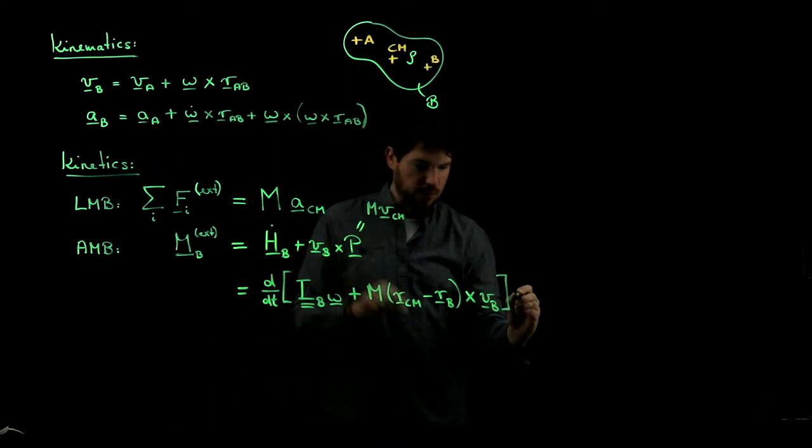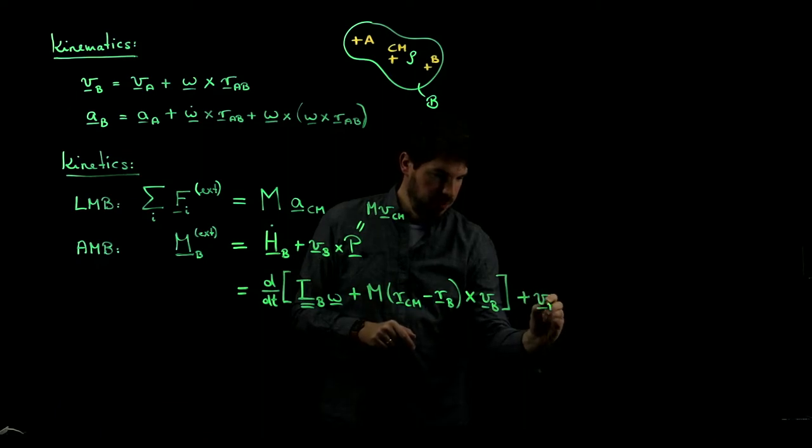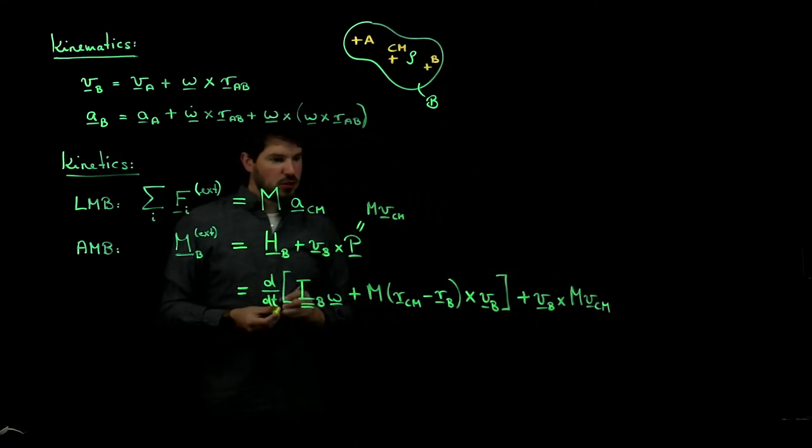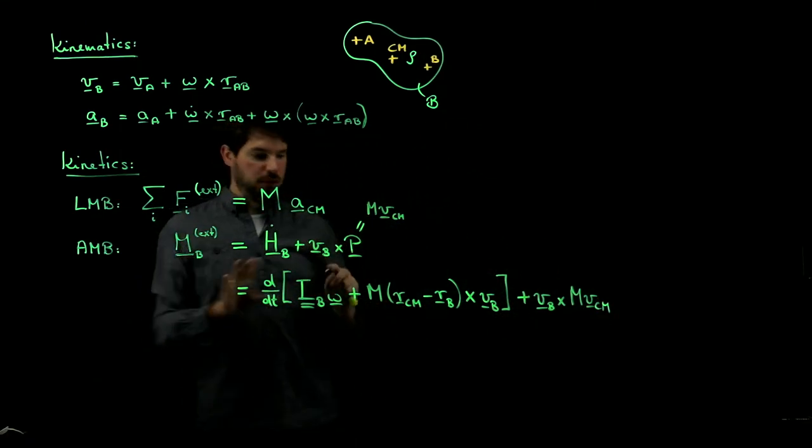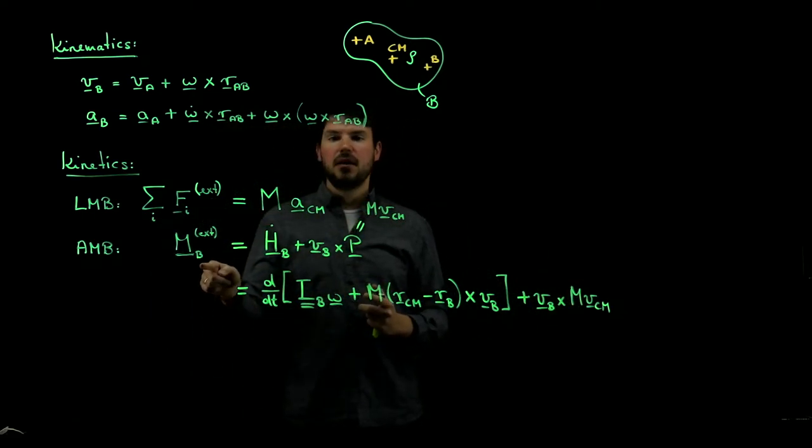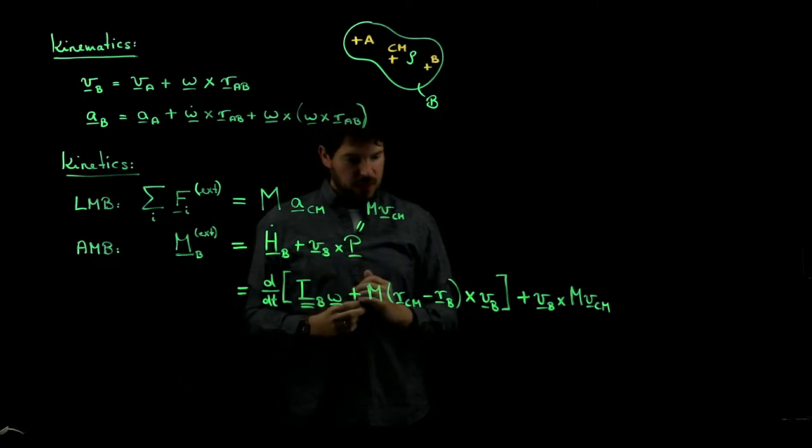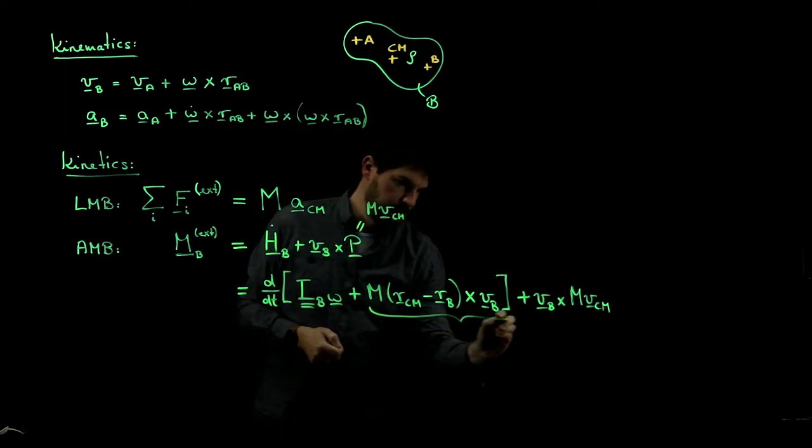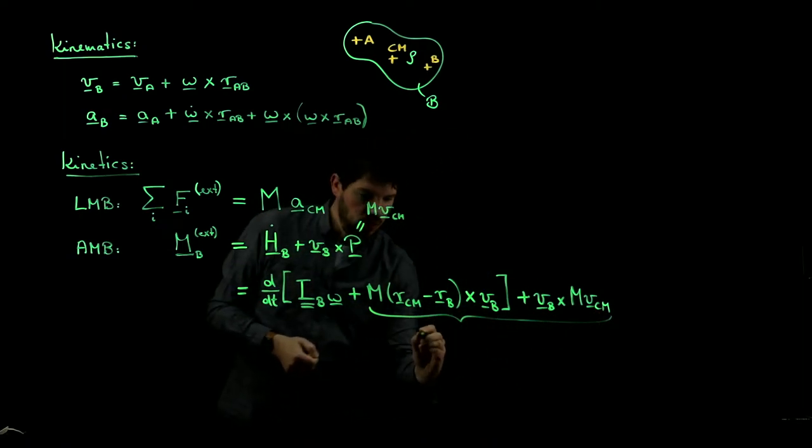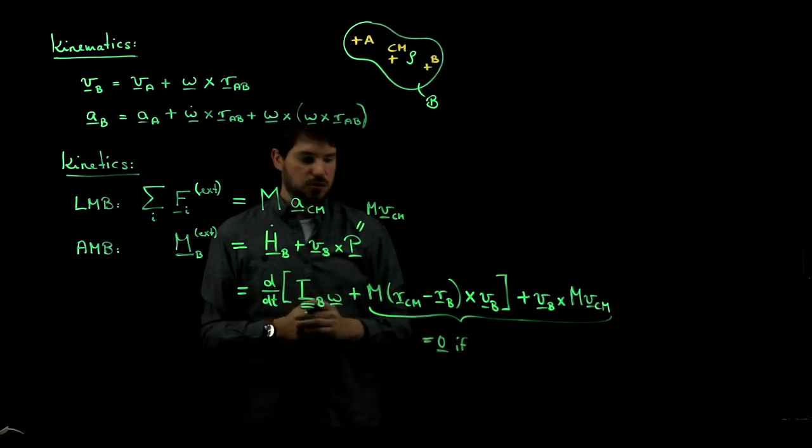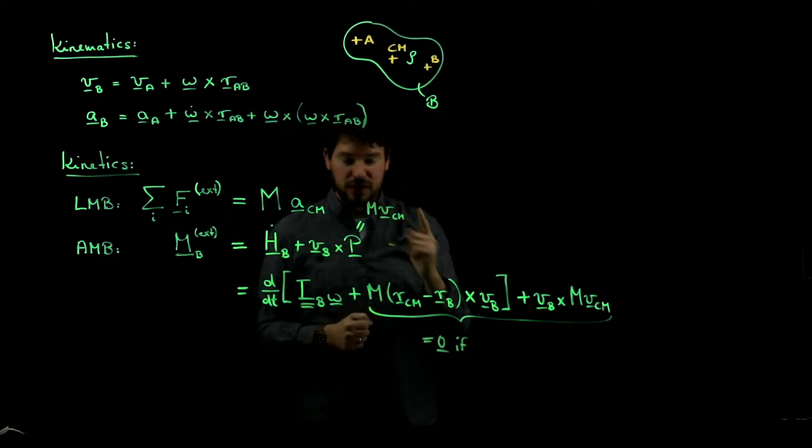And then there's this term left. So we have plus another Vb cross the linear momentum, which is just that. So this looks very complicated, but as before, we should watch out, because many of these terms we can actually make them cancel by choosing point B in a careful way. In particular, if we look at these two terms here, what we saw in class is that these two terms vanish. So these two are equal to zero if,